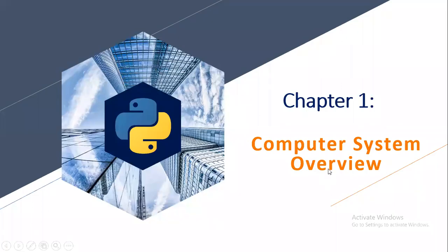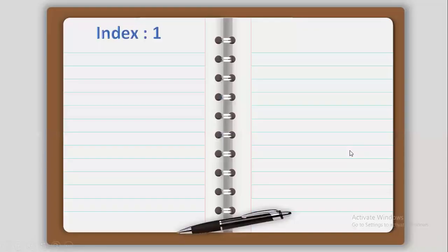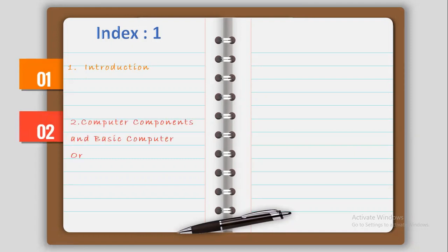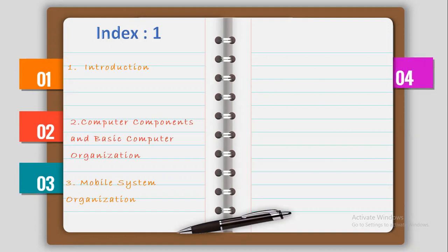Today we'll be discussing Chapter 1 of Computer System Overview. In this, we'll be talking about the basic introduction, the components of basic computer organization, basic computer organization, mobile system organization, and the types of software.